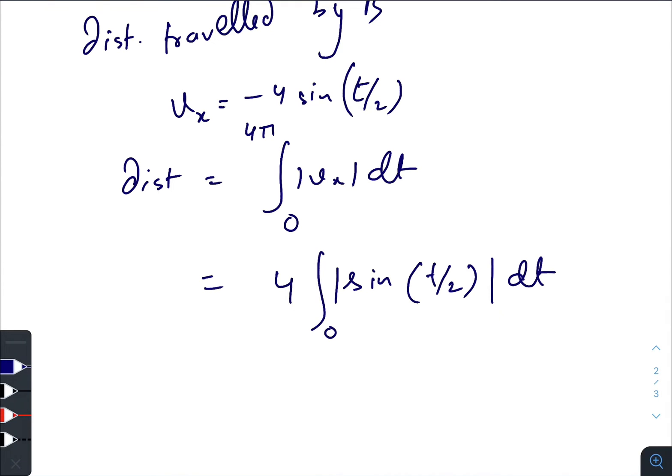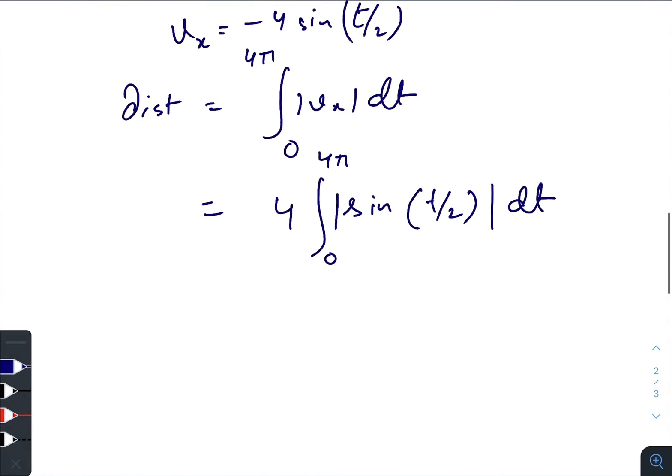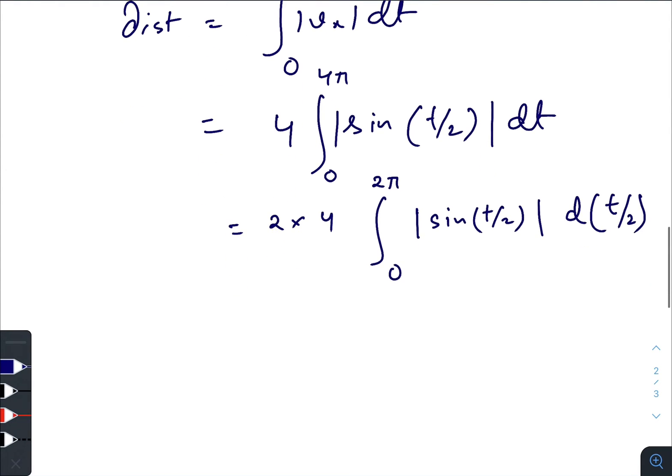Now, just replacing this: ∫8 from 0 to 2π |sin(t/2)| d(t/2). So this becomes this one.